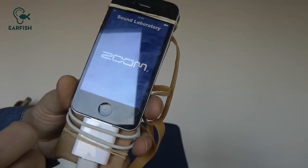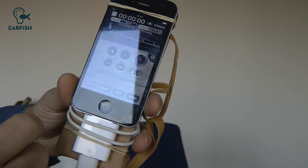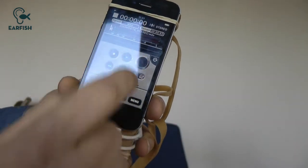Start the Zoom Handy Recorder app and start recording by pushing the red button. Make sure you're recording in stereo.